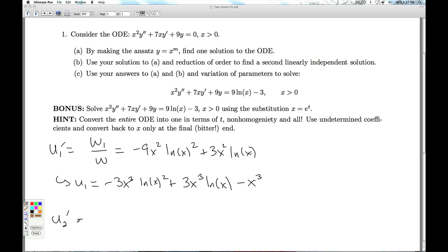We have a function u2 prime, which is w2 over w. You work that out, and you get 9x squared natural log of x minus 3x squared. Integrate that. Once again, use parts. You can actually use what you've learned from this integral. u2 gives you 3x cubed natural log of x minus 2x cubed.